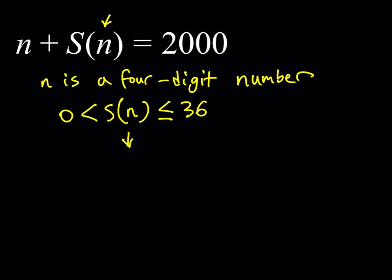So basically, this requires that n needs to be between 1964 and 2000. Obviously, in this case, it cannot equal 2000, because S(n) cannot equal zero.